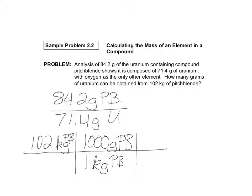And so now we can use that conversion factor that they gave us in the beginning. In 84.2 grams of pitchblende, there's 71.4 grams of uranium.